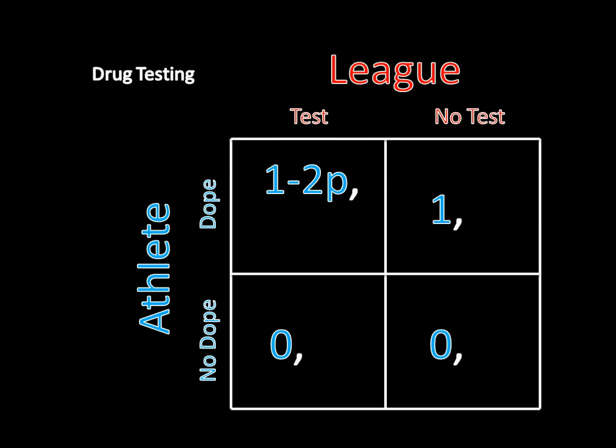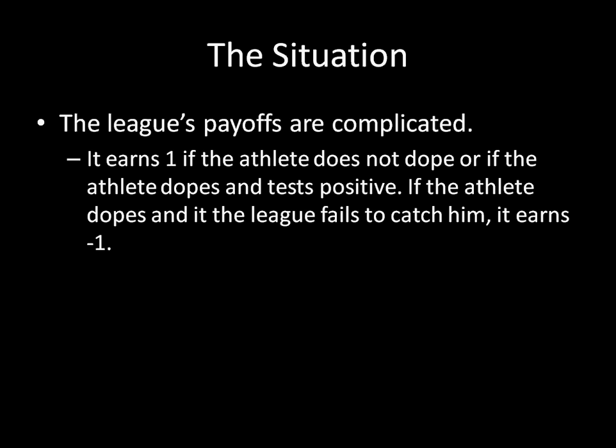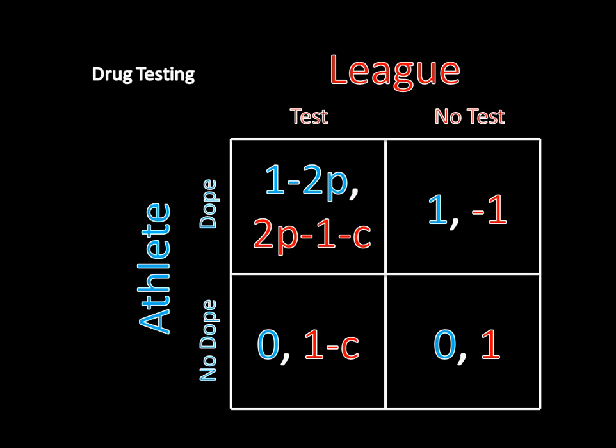To fill out the league's payoffs: the league earns one if the athlete does not dope, or if the athlete dopes and tests positive. If the athlete dopes and the league fails to catch him, it earns negative one. It's really bad for the league if it doesn't test a doping athlete, or if the test fails — because remember, the test isn't perfect. Testing also incurs a cost C, which is some positive amount. Filling all that into the payoff matrix gives us what's shown here.